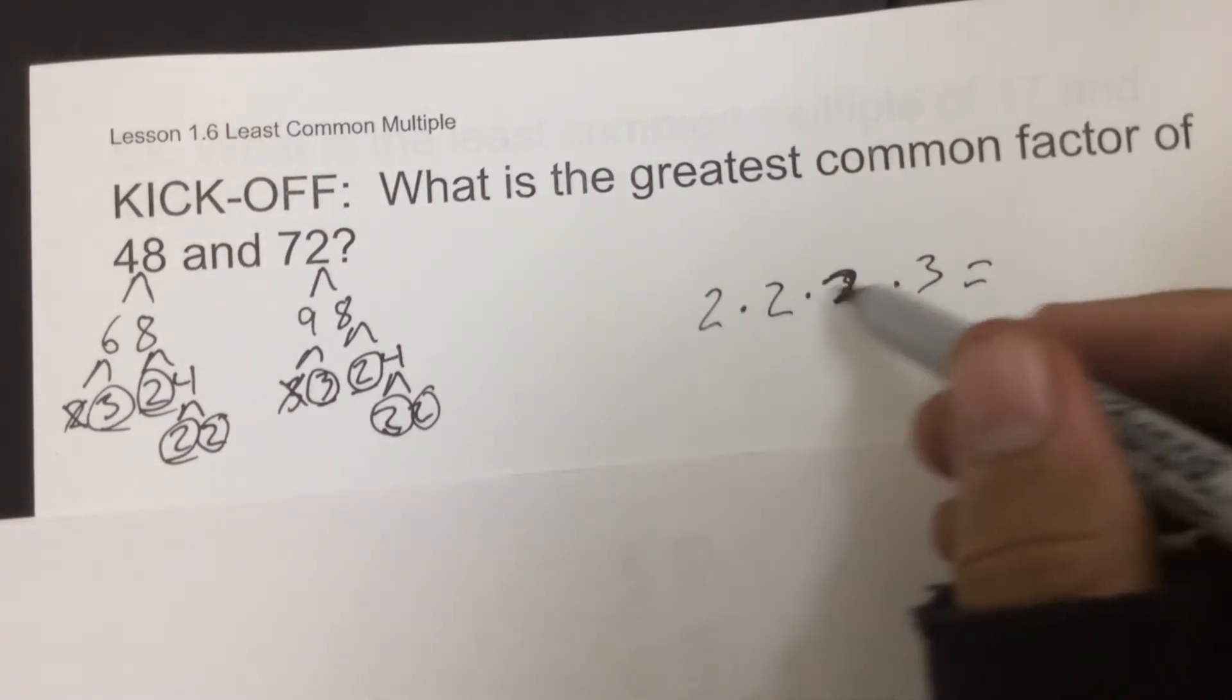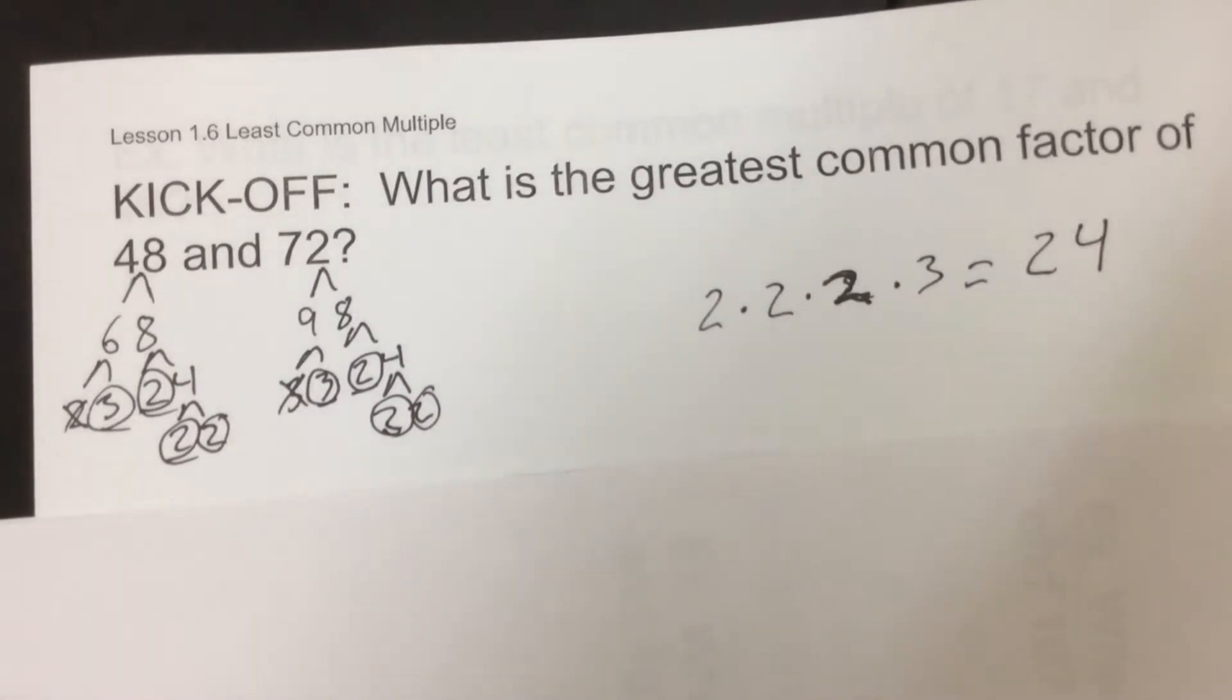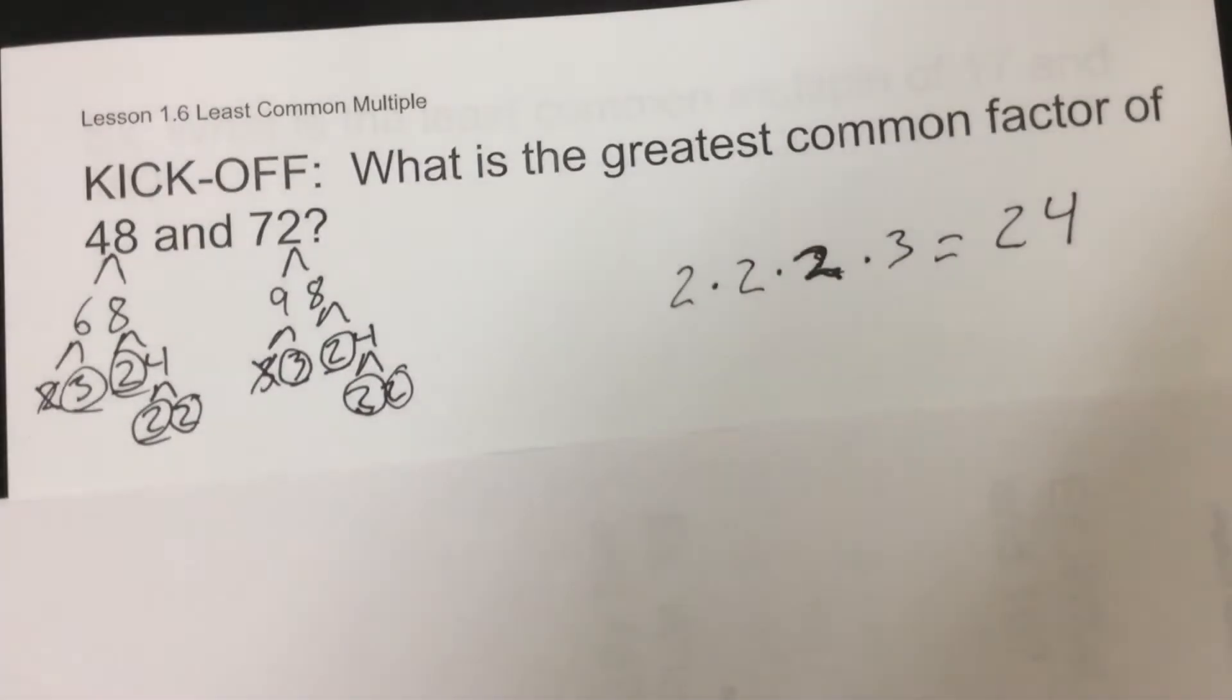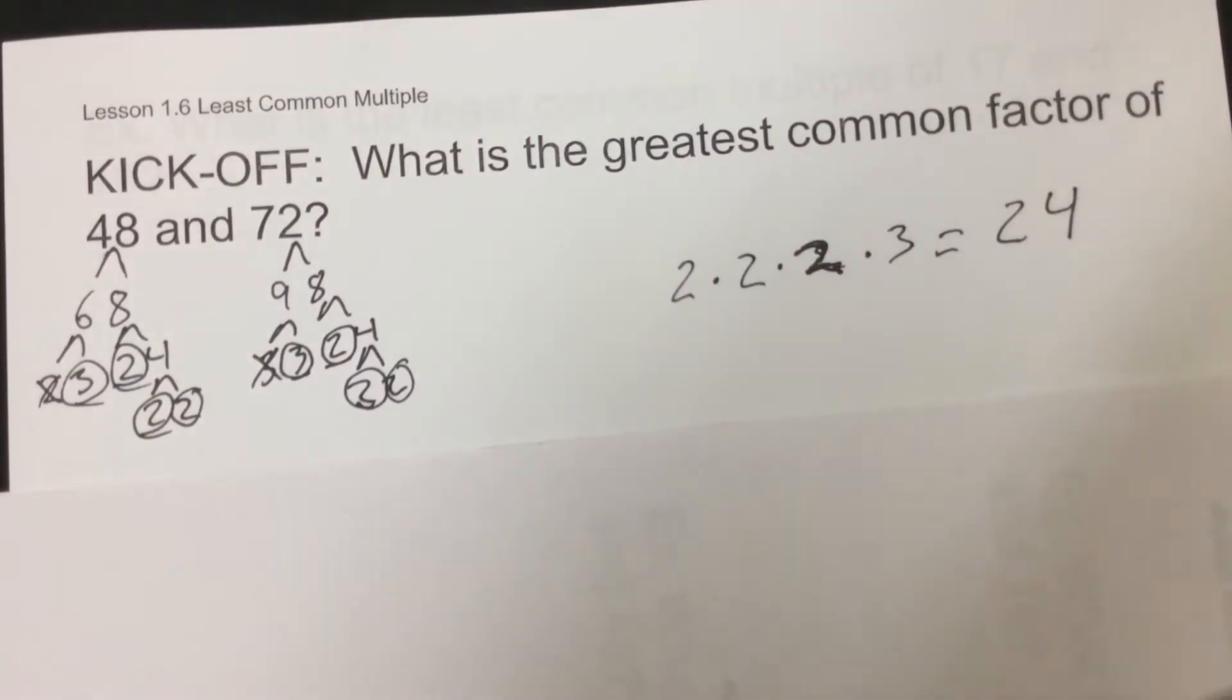So we have 2 times 2 which is 4, times 2 again which is 8, times 3 which is 24, and that's our greatest common factor. So when we do prime factorization we can get this. The other way, when they're smaller numbers, we can just list out the factors and then circle what's in common.